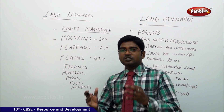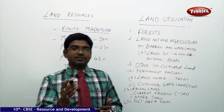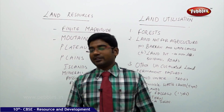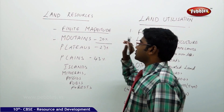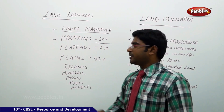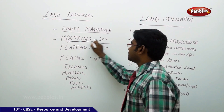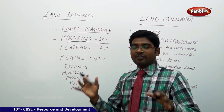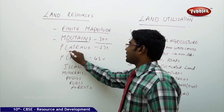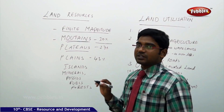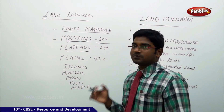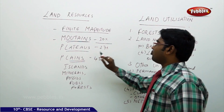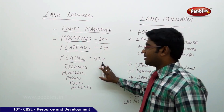Now let us see how much percentage of land is covered by each type. The entire 30% of land available on earth is covered by mountains. When we move on to plateaus, we have nearly 27% of the entire land covered with plateaus. And moving on to plains, we have nearly 43% of the entire land covered with plains.